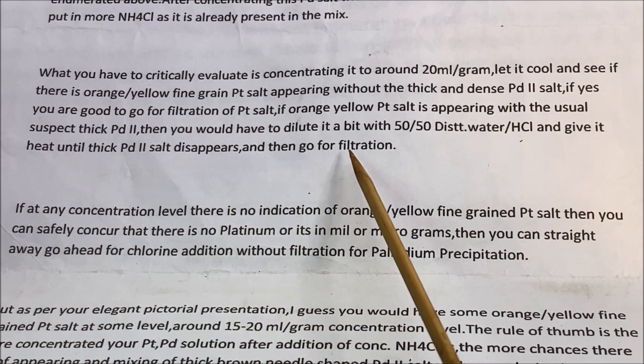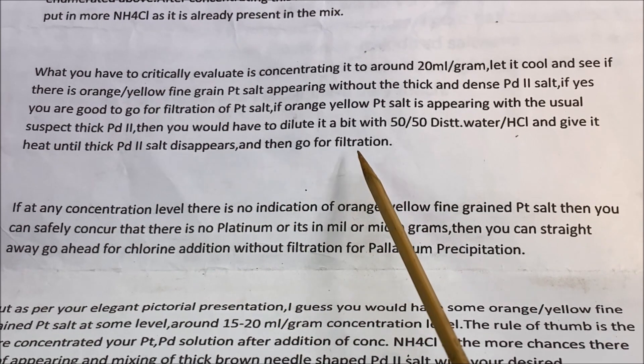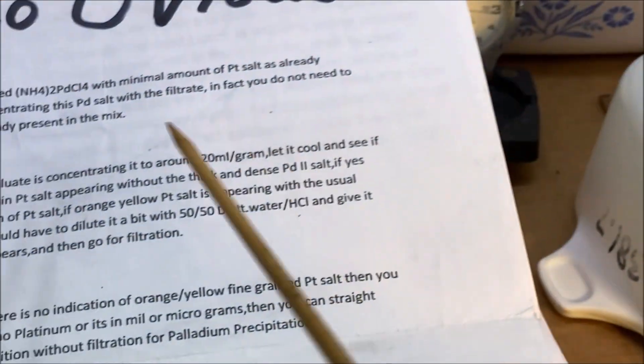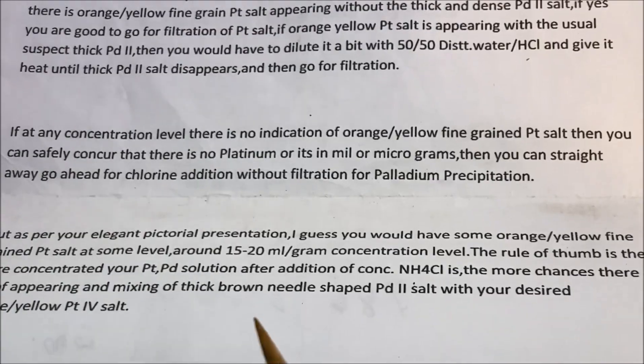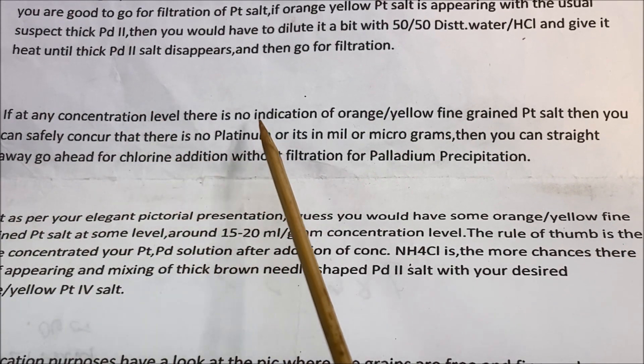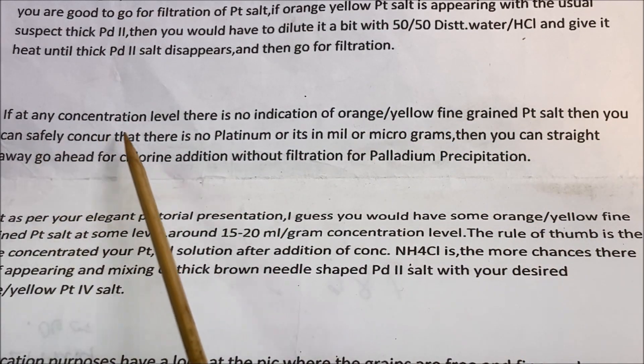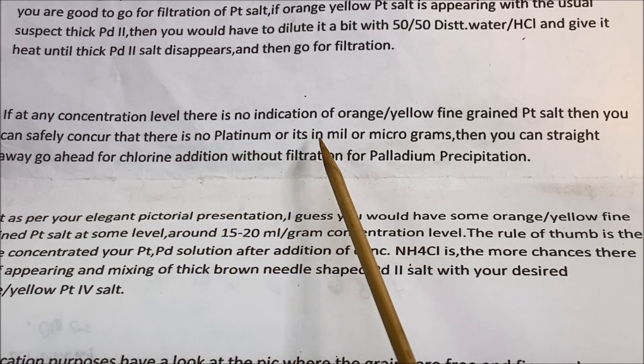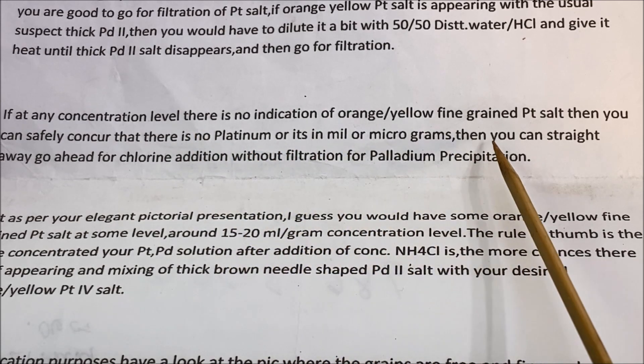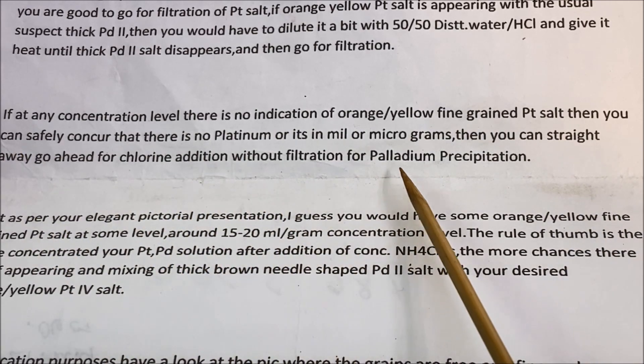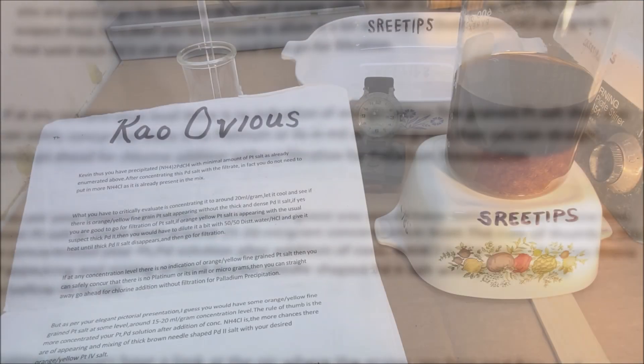Then go for filtration to get the platinum salt if any out of our solution here. And it goes on to say that if at any concentration level there's no indication of the orange yellow Pt fine grain platinum salt, then you can safely concur that there's no platinum or it's in milligrams or micrograms. Then you can go straight ahead and start your chlorine addition without filtering for palladium precipitation.